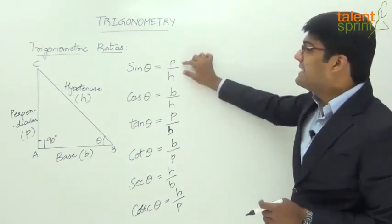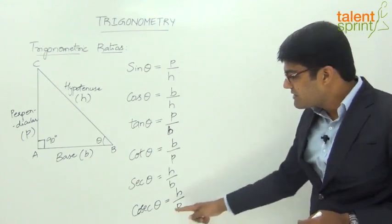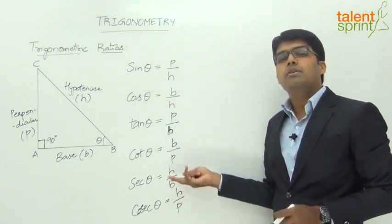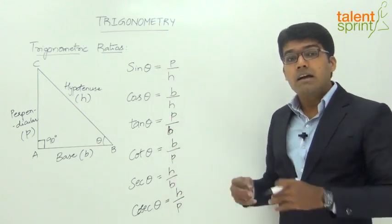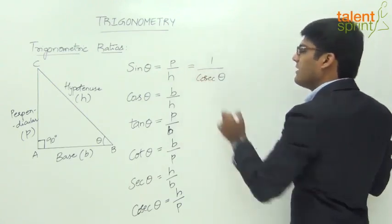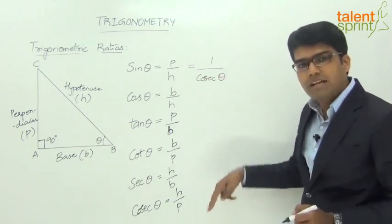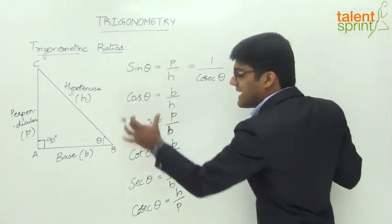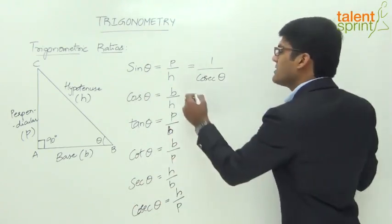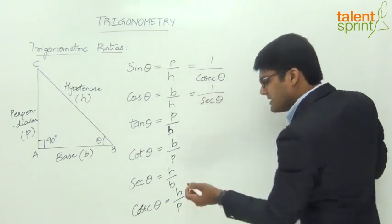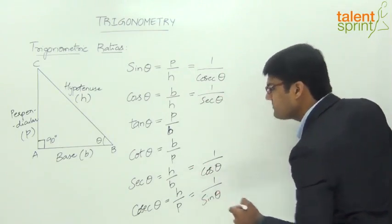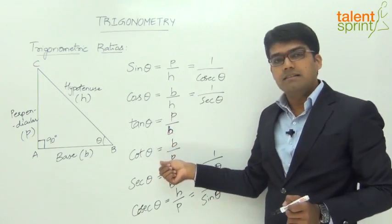Sine theta is p by h and cosecant theta is h by p, so sine theta and cosecant theta are reciprocals of each other. We can say sine theta equals 1 upon cosecant theta. Likewise, cos theta and secant theta are reciprocals of each other — cos theta is b by h whereas secant theta is h by b — so cos theta equals 1 by secant theta, and secant theta equals 1 by cos theta, and cosecant theta equals 1 by sine theta.